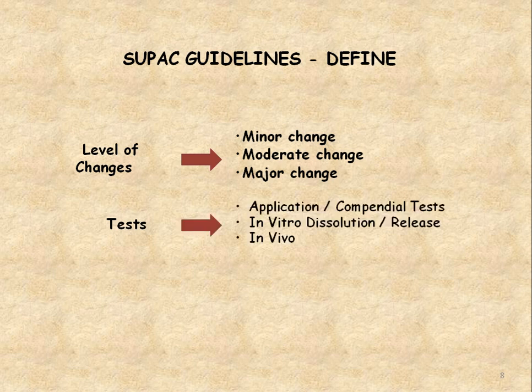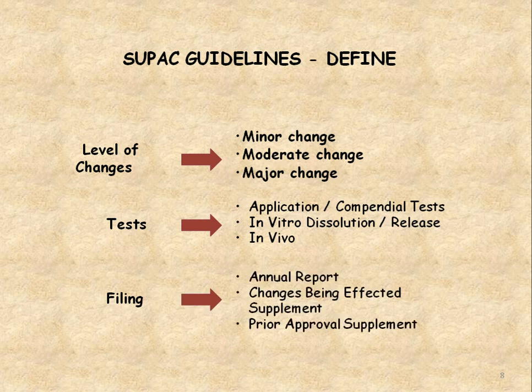After these changes, the tests performed are: application or compendial tests, in vitro dissolution test or in vitro release test, and in vivo dissolution as well as bioequivalence tests. Then you have to file those changes in one of three documents: either in the Annual Report, as Changes Being Effected in supplements, or as a Prior Approval Supplement.